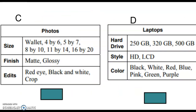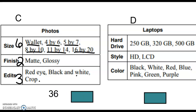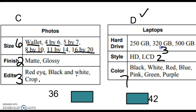For practice problems C and D, use the fundamental counting principle. For the photos problem, there are six sizes, two finishes, and three edits — so six times two times three gives the total combinations. For the laptop problem, pause and calculate it yourself. The answer is three times two times seven, which equals 42 different laptop combinations.